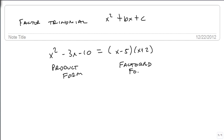We want to start with something like x squared minus 3x minus 10 and end with x minus 5 times x plus 2. We can always go back and check our answer. x times x is x squared, x times 2 is 2x minus 5x minus 10. When we combine, we get back to our product form. The way we check our answer is by foiling.